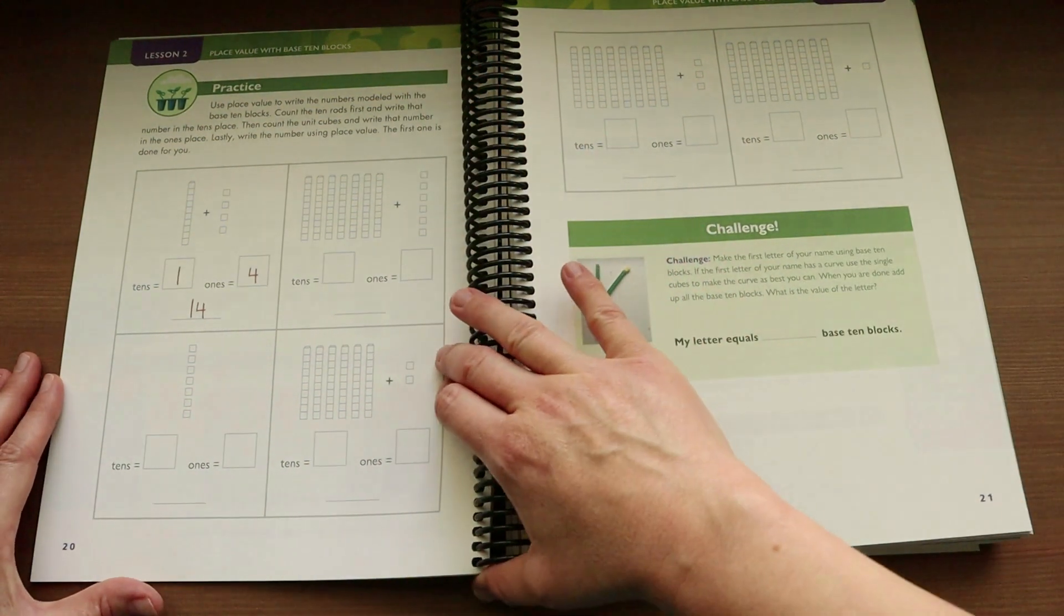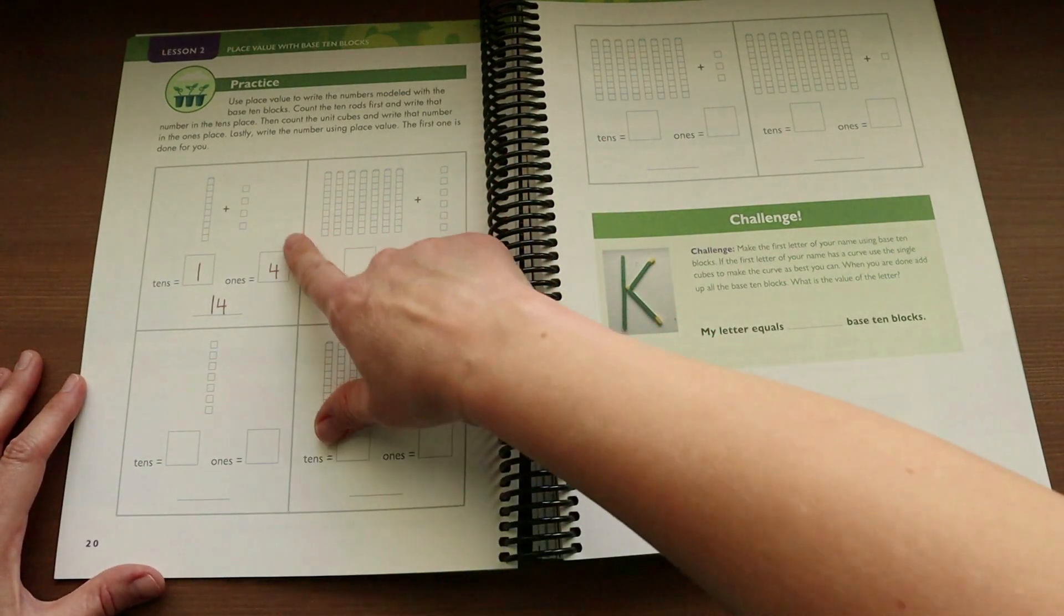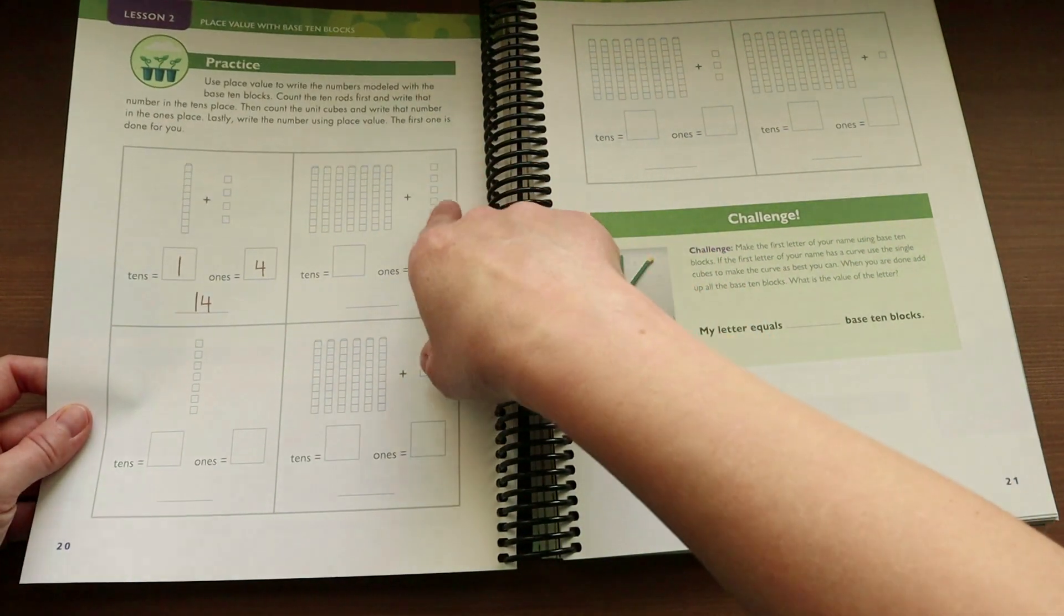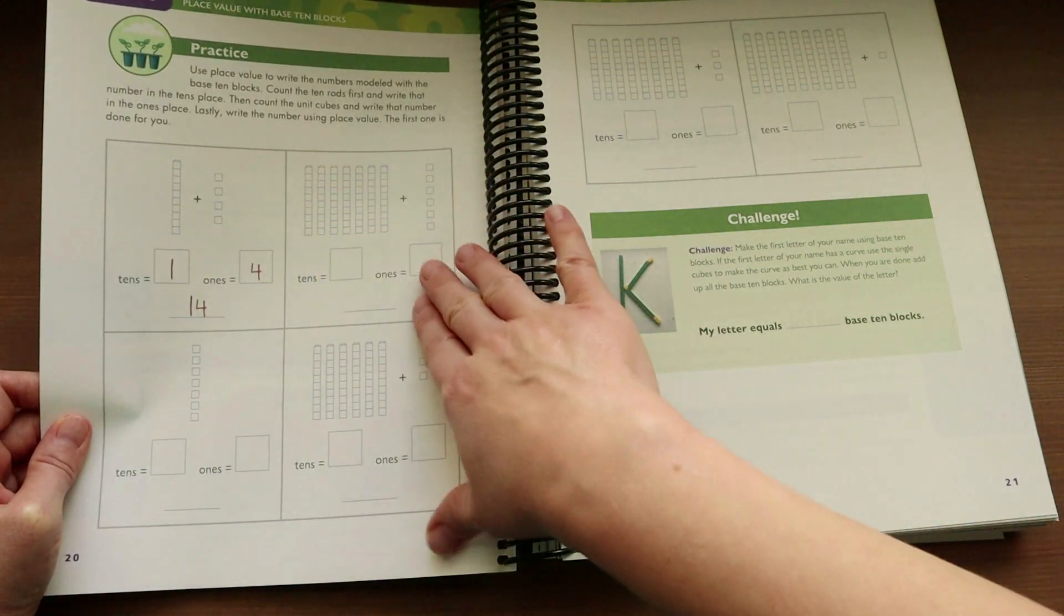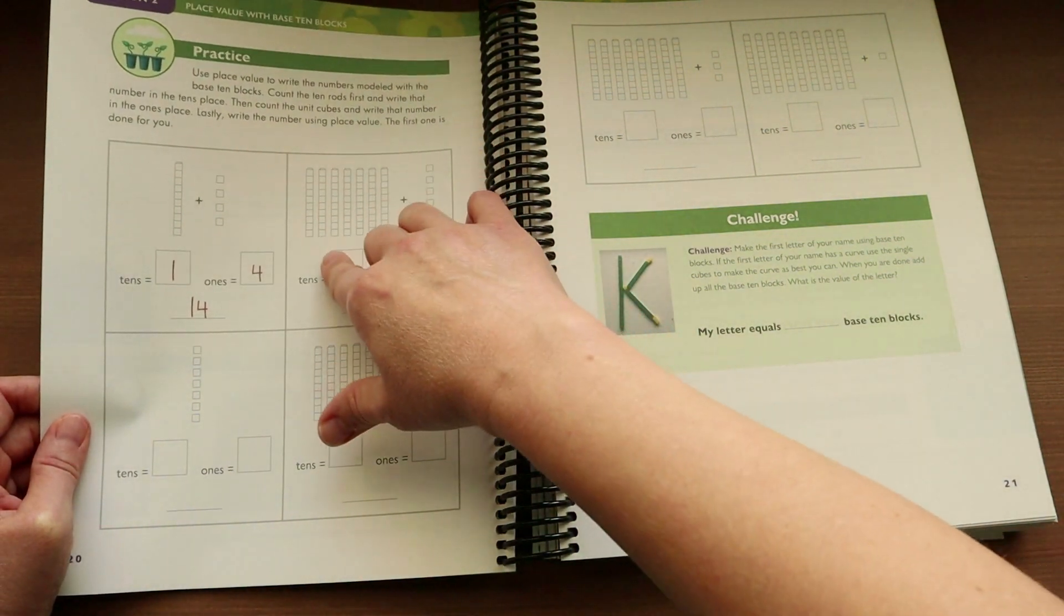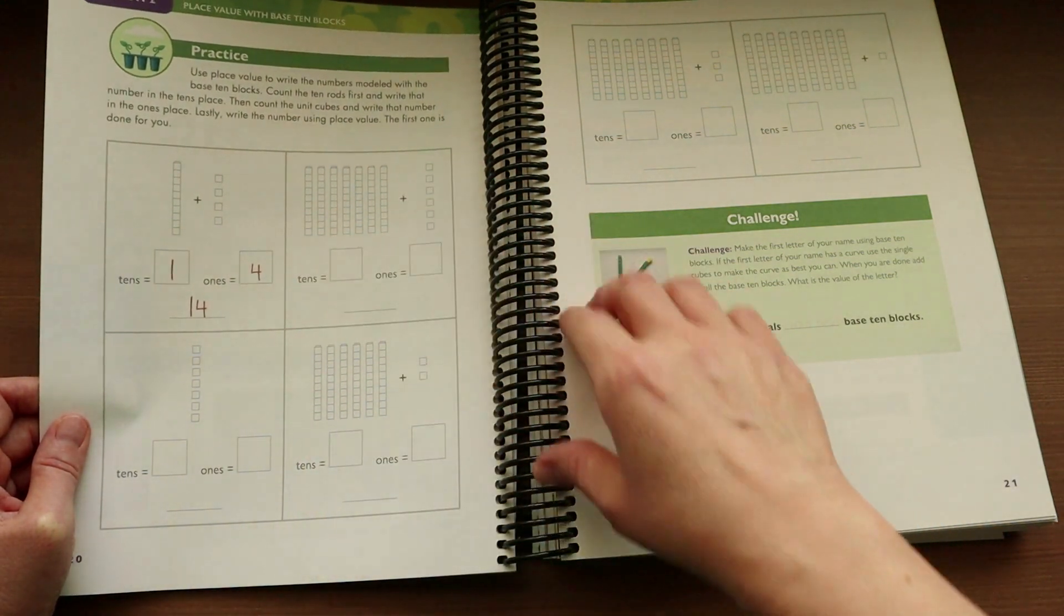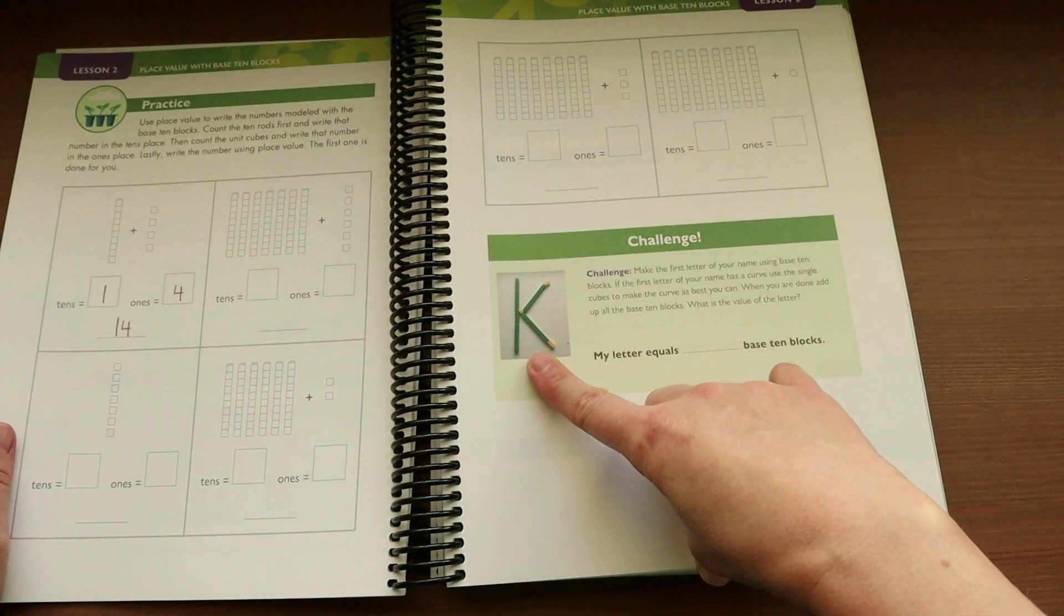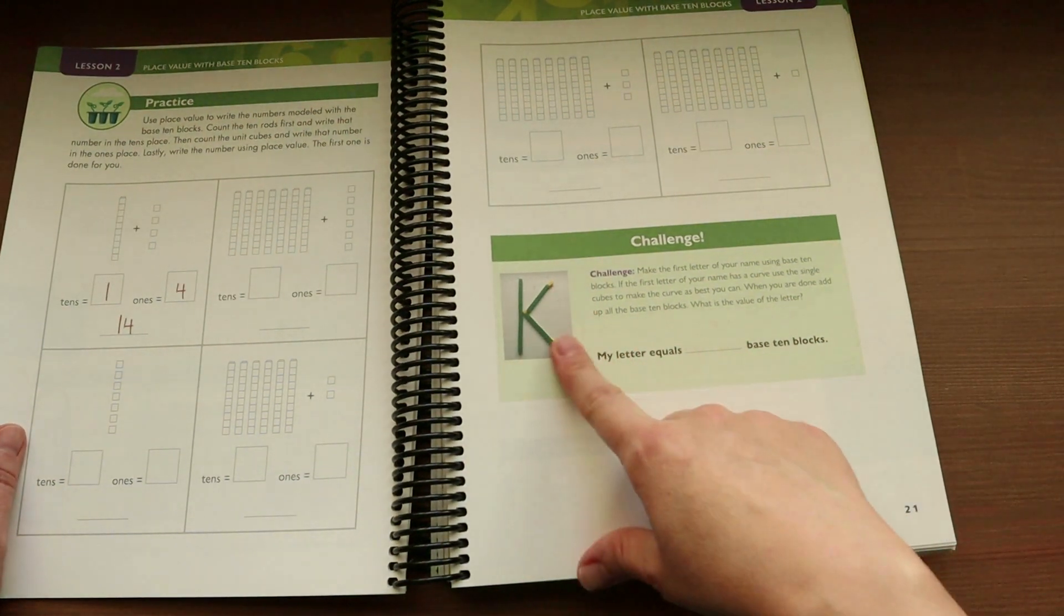In the first couple of lessons, you're going to be working with place values with your base ten blocks. The first one gives you an example of what to do, and then your child will go and complete the place values, and this is where they're going to need their manipulatives. They will figure out the place values for tens and ones, and then write the number together. They will also have a challenge where they make the first letter of their name with the base ten blocks, and then they'll write how many blocks it took to make that letter.